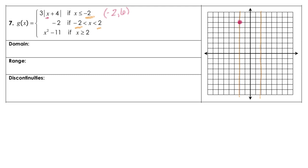Keep in mind this has been shifted to the left 4. So we move over 4 — 1, 2, 3, 4 — and it did not move up or down any. So the vertex of that V is sitting there, and we can go ahead and connect those. If you want another point on the other side, you're welcome to substitute one in. There's that part of the graph.